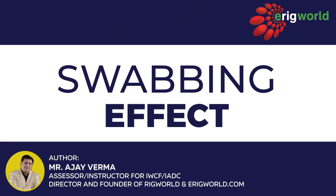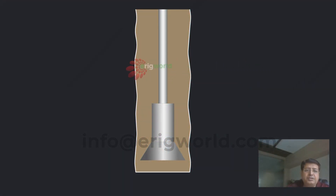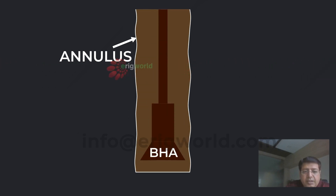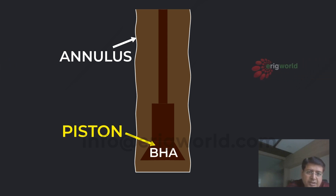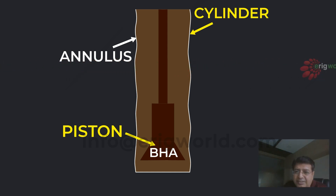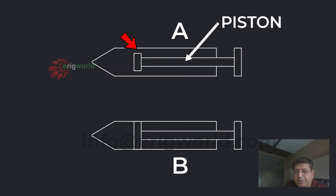To make the swabbing concept clear, let's discuss the swabbing effect using an example of a well. The well has a BHA and an annulus — both full of mud. We consider the BHA as a piston and the wellbore as a cylinder, replicating a piston-liner effect. Similarly, I've taken two different piston-liner examples — essentially two syringes. In syringe A, there is a big gap between the piston and cylinder.